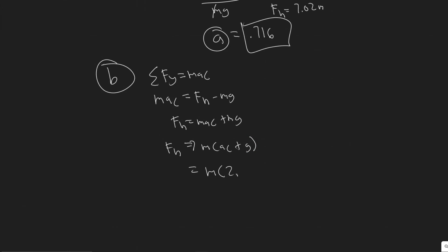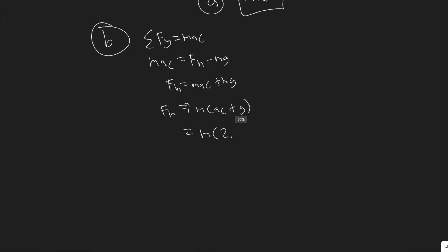So it's M times 2.78 plus G, which is the acceleration due to gravity, just a constant value. So plus 9.8. So F sub n is 12.58 M.